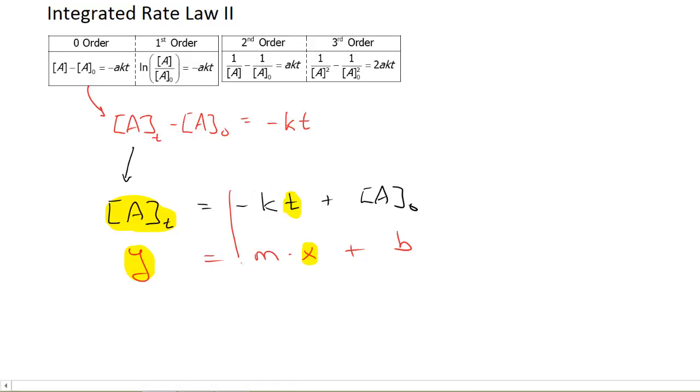That means my slope is right here. M is the same thing as negative K, negative the rate constant. So if I can find this slope from doing this analysis, I'll be able to find the rate constant. And my initial concentration should be my Y intercept.